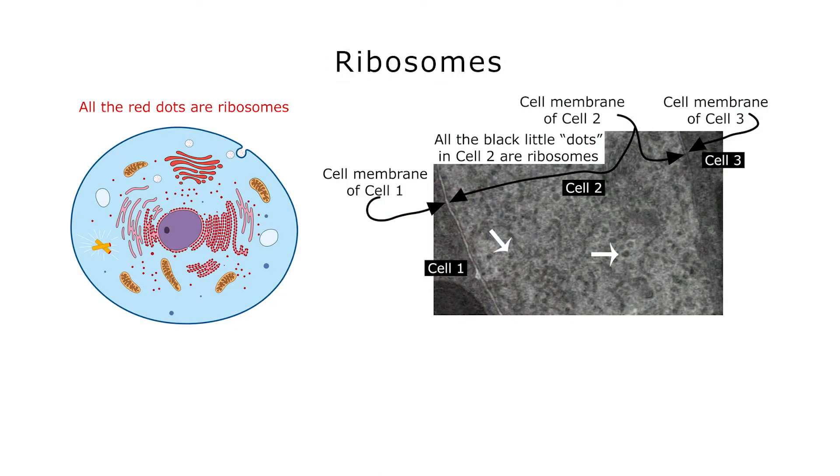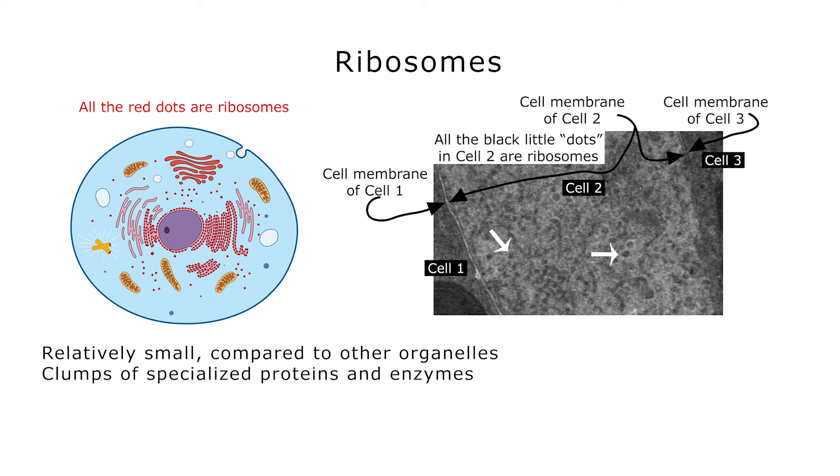And let's look at our figure as I talk about this. And what we can see here, these ribosomes are really, are very small, compared to other organelles, they're small, but compared to molecules, they're big. But these are big clumps of specialized proteins and enzymes that all kind of clump together so that they're able to make proteins. And what we're seeing here in the diagram on the left, all the little dots in there, those represent the individual ribosomes.